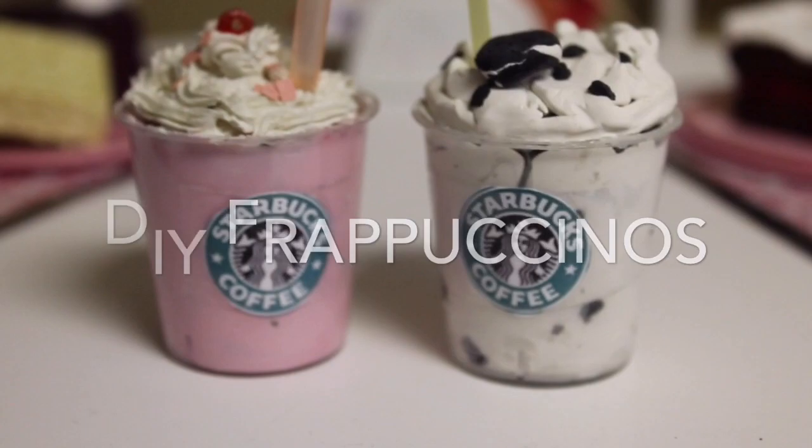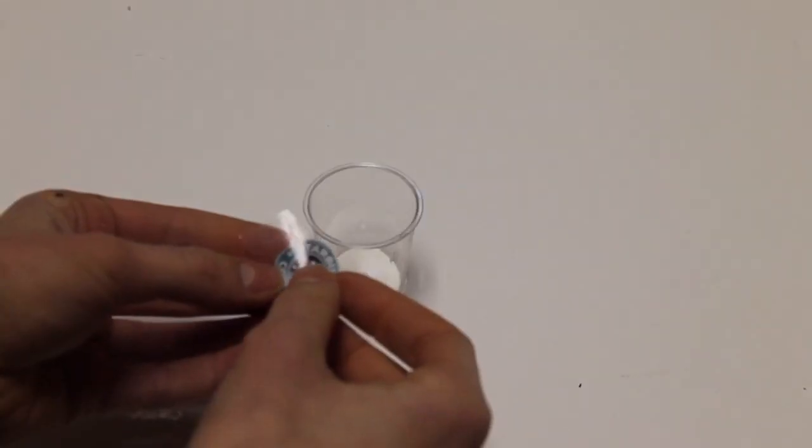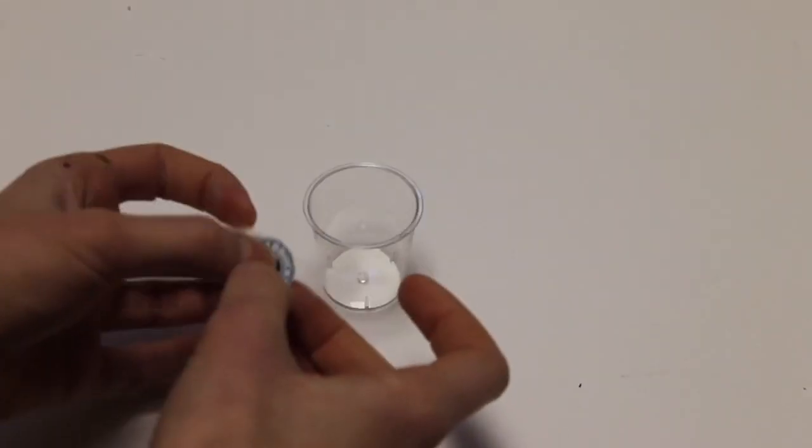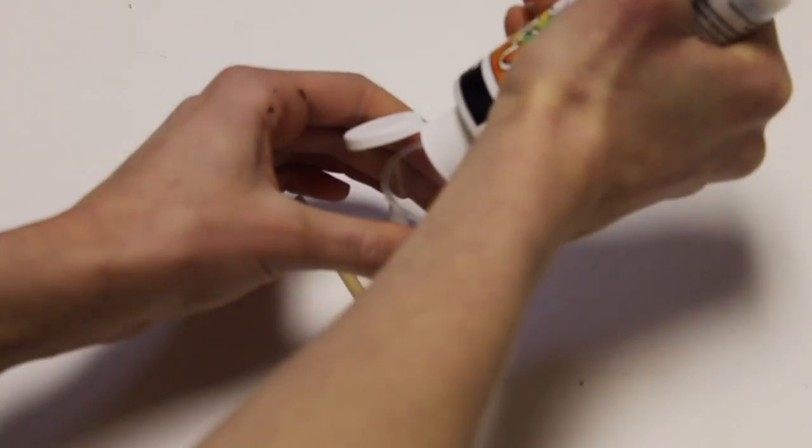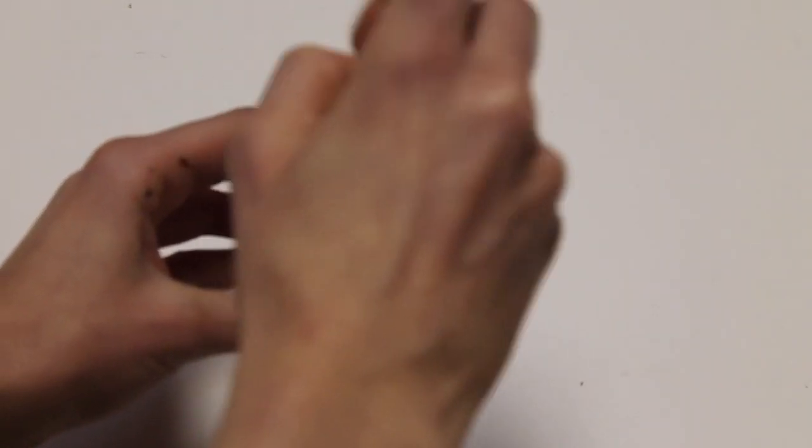So to do this I'm going to take a Starbucks label and tape it onto a little shot glass. I just printed this off the computer and then I'm going to mix in some green and white paint into my little plastic shot glass and paint that all over just so it covers the whole thing.